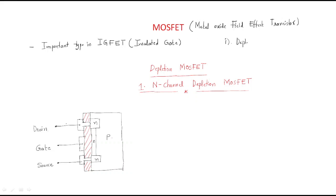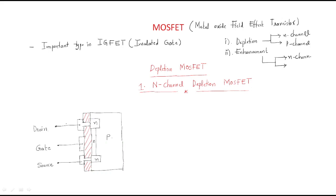Generally we have two types of MOSFETs: the first is the depletion type and the second one is the enhancement type. The depletion type MOSFET is again two types: one is N-channel depletion MOSFET and another one is P-channel depletion MOSFET. Similarly, the enhancement type also has two types: N-channel and P-channel. First we will discuss about the depletion MOSFET, starting with the N-channel depletion MOSFET.